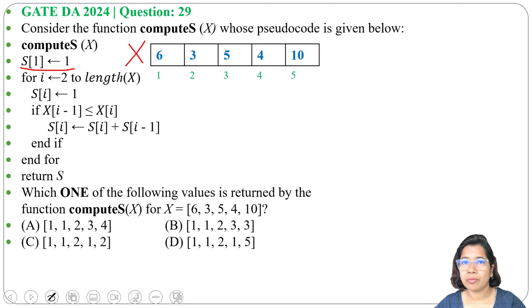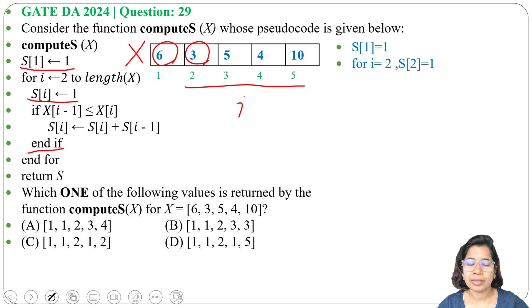Now for i = 2 to length(X), i will range from two to five. S[i] = 1, means S[2] = 1. Initially S[1] = 1 was given. Now here S[2] = 1. If X[i-1] ≤ X[i], means if 6 ≤ 3? Is 6 less than 3? No. Then we'll do end if and return the value of S, means S[2] = 1.